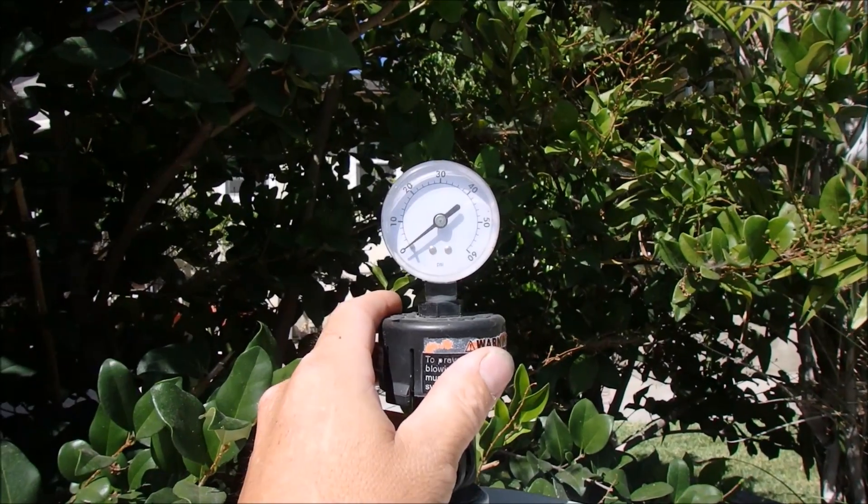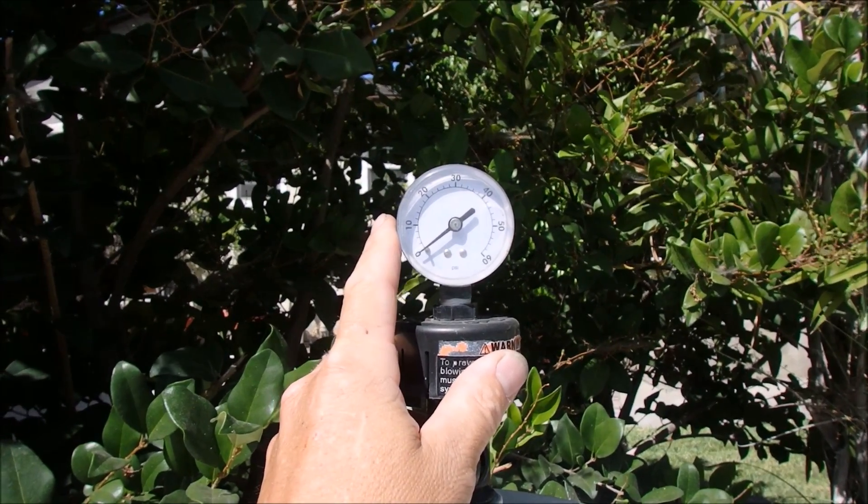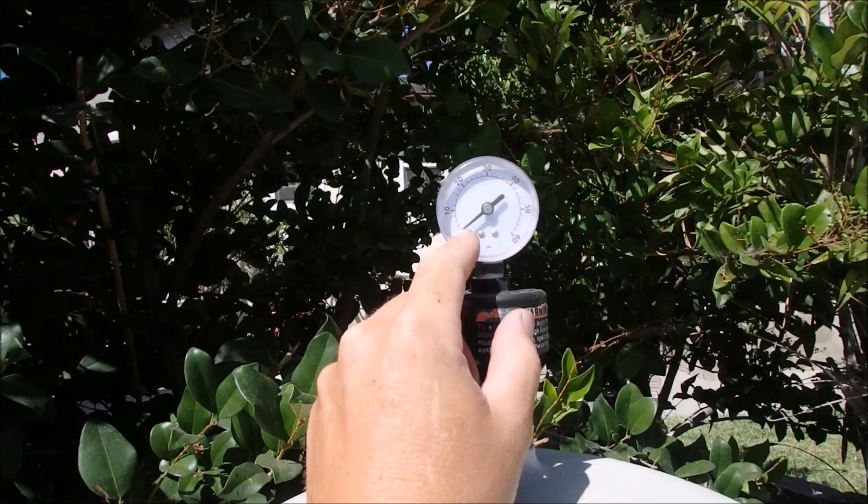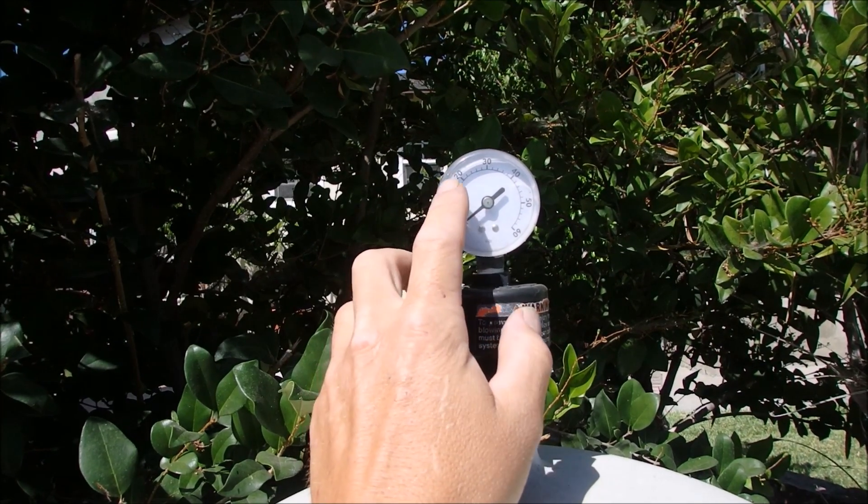Basically the PSI is the amount of pressure in the pool filter. This will affect the flow of water. So as your filter gets dirty, the PSI will rise on the gauge here.